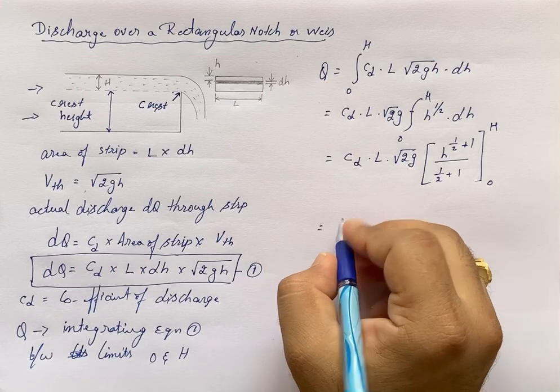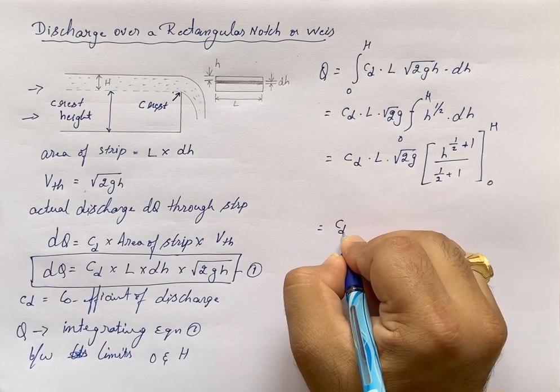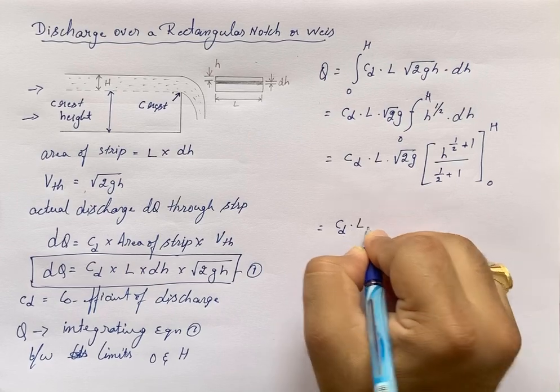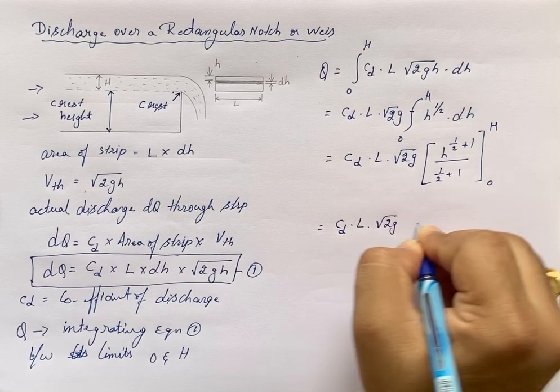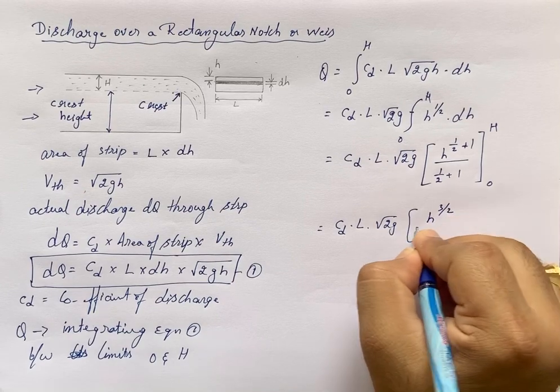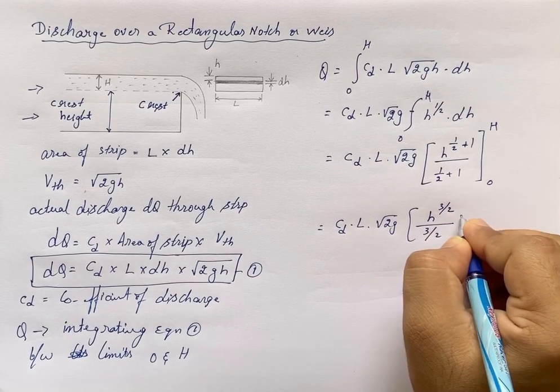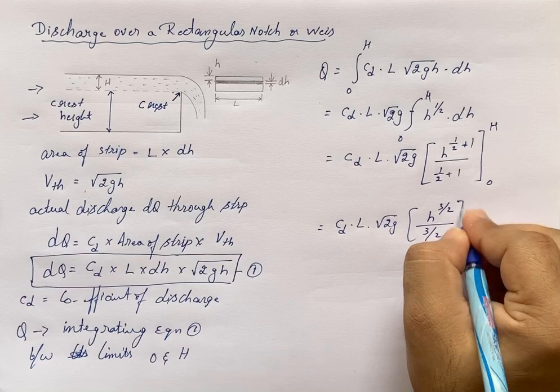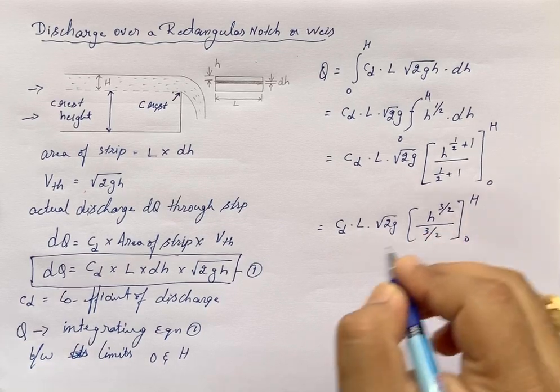When I do the further calculation, Cd × L × √(2g) times H^(3/2) divided by 3/2, evaluated from 0 to H.